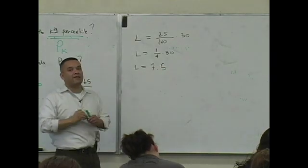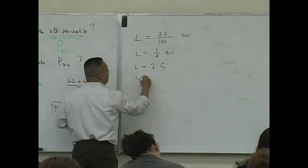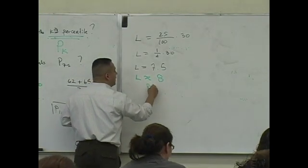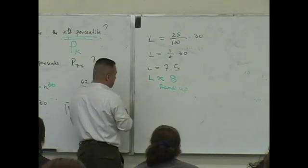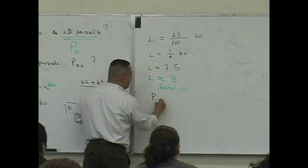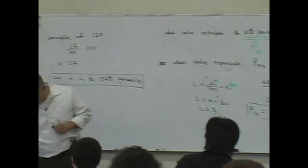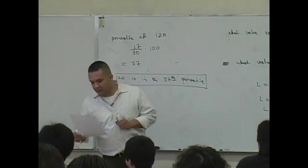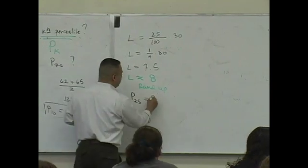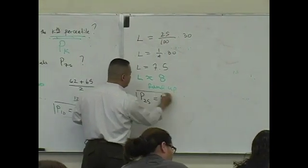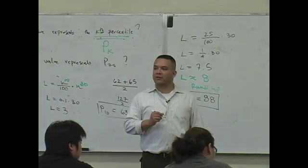7.5, nice. What do you do with that 7.5? Good, this is rounded up. It's approximately 8. You round up. Final answer. If I determine the 8th data score in the sorted list, what are you going to get? What is it? I see an 88.